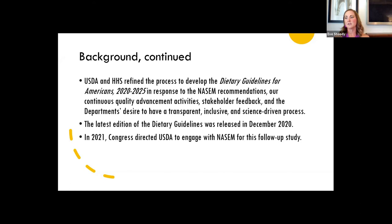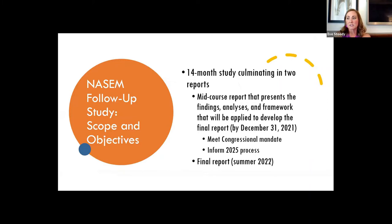The latest edition of the Dietary Guidelines was released in December 2020, and in early 2021, Congress directed USDA to engage with the National Academies for this follow-up study. This follow-up study is a 14-month study. It will culminate in two reports, but they're very different than the two reports from the first committee. For this study, we'll have a mid-course report and then a final report.